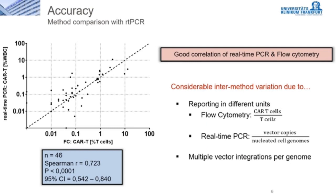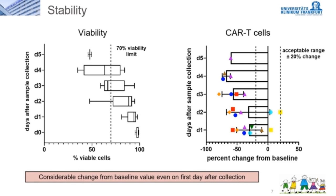Forty-six CAR T-cell monitoring samples were independently assessed for accuracy analysis with flow cytometry and real-time PCR. There is a clear correlation as shown by Spearman's correlation coefficient. The higher the CAR T-cell quantity, the smaller the spread; in the area of the detection limit the scattering becomes wider. We see differences between methods due to reporting in different units and possible multiple vector integrations per genome, but in summary we observed a clear correlation and comparability.